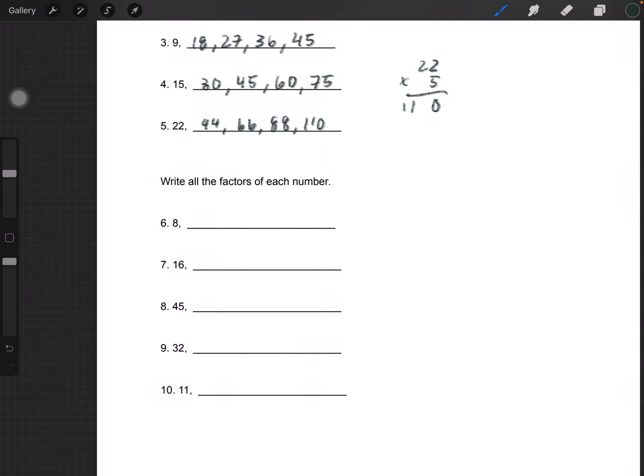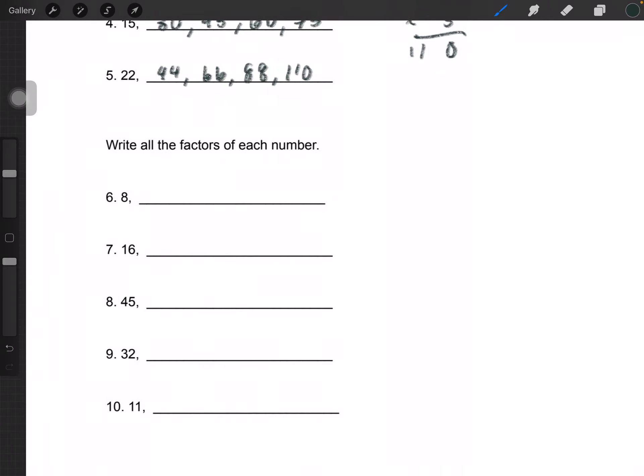Problems 6 through 10 are asking us to write the factors of each number. The factors are basically what numbers you can multiply together to make a given number. For 8, you have 1 times 8 and 2 times 4, and that should be it.